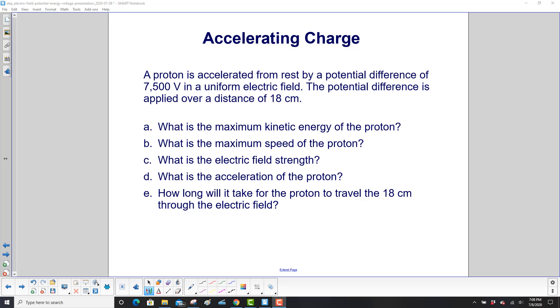A proton is accelerated from rest by a potential difference of 7,500 volts in a uniform electric field. The potential difference is applied over a distance of 18 centimeters.